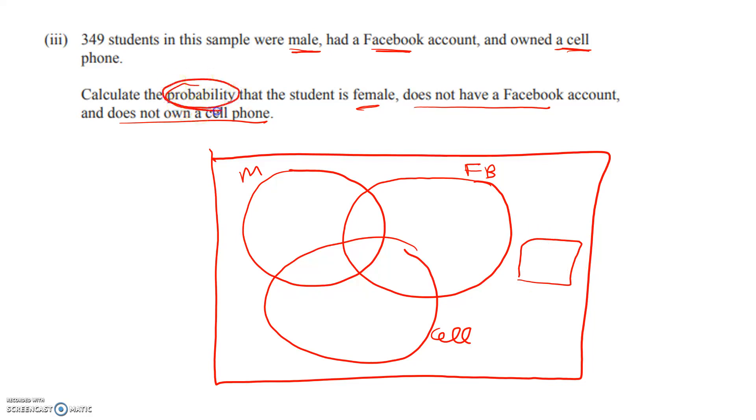The probability we're looking for is based on this number out here. One thing to highlight is that we're not trying to find a number. If you just find that number, you're going to do a whole lot of work for merit. You need to find a probability, and the key thing is that we're working out of 996 students here. We'll start in the middle. Happily, we're given that number there, that's 349.